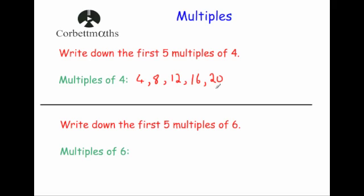So the first five multiples of four, the first five numbers in the four times tables. You can carry on: twenty-four, twenty-eight, thirty-two, thirty-six, forty and so on. But we were just asked for the first five. That's it.